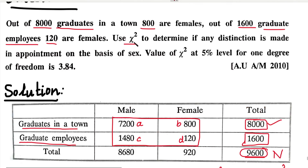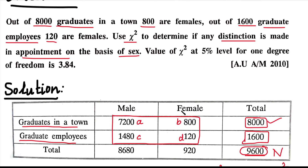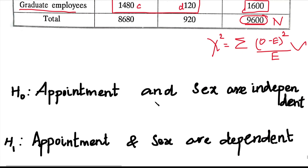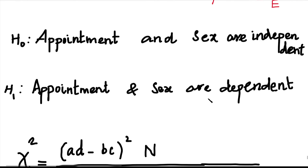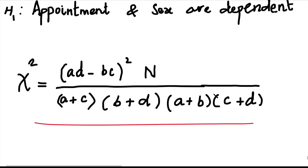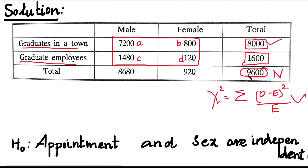The question asks us to use Chi-square to determine if any distinction is made in appointment on the basis of sex. So, H0 (null hypothesis) is that appointment and sex are independent. H1 (alternative hypothesis) is that appointment and sex are dependent. Using the 2x2 matrix formula without computing expected frequencies, we substitute all values including N equals 9600.